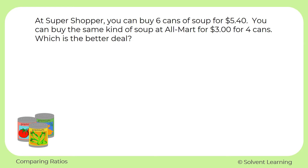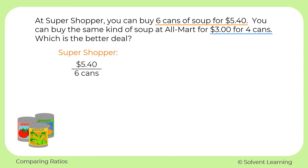So let's see the information that we have. We know that Super Shopper has six cans of soup for five dollars and forty cents. We'll need to set those up as ratios in order to find the unit price. At Super Shopper we can set that up as a fraction: five dollars and forty cents over six cans. Remember when we're working with money and we set up a ratio, we want it to be at the numerator. We can use division to figure out the unit rate: five dollars and forty cents divided by six equals zero point nine zero, or ninety cents. So at Super Shopper it's ninety cents per can.